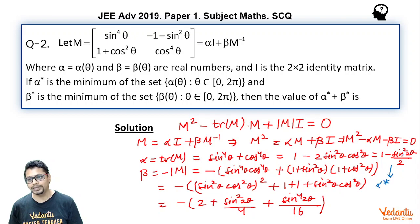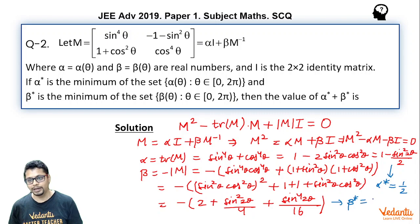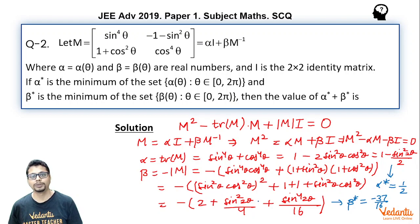Setting sin²(2θ) = 1, the minimum value of alpha becomes 1 − 1/2 = 1/2, so alpha* = 1/2. For beta*, putting sin²(2θ) = 1 gives beta* = −(2 + 1/4 + 1/16) = −37/16. Therefore alpha* plus beta* = 1/2 − 37/16 = 8/16 − 37/16 = −29/16.